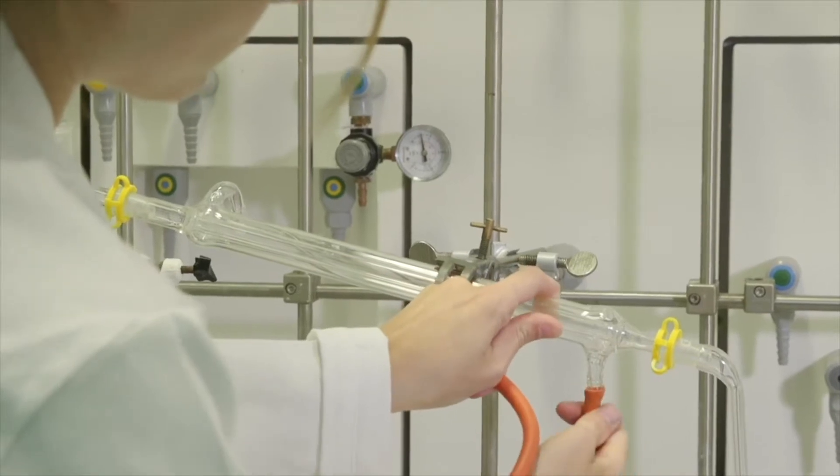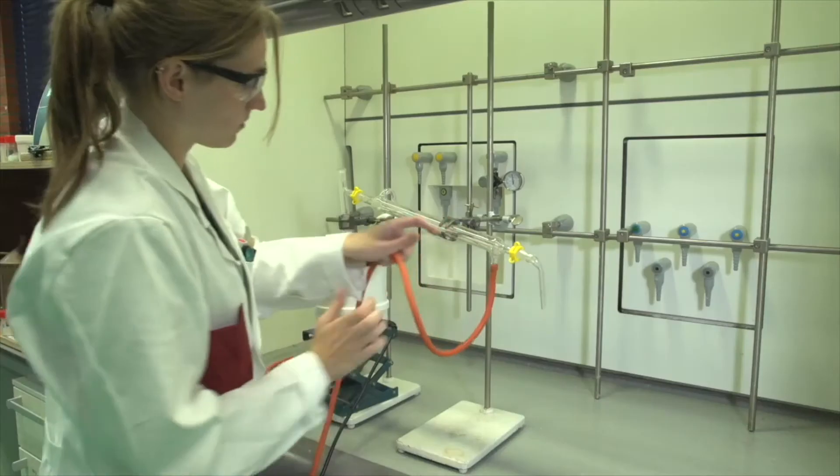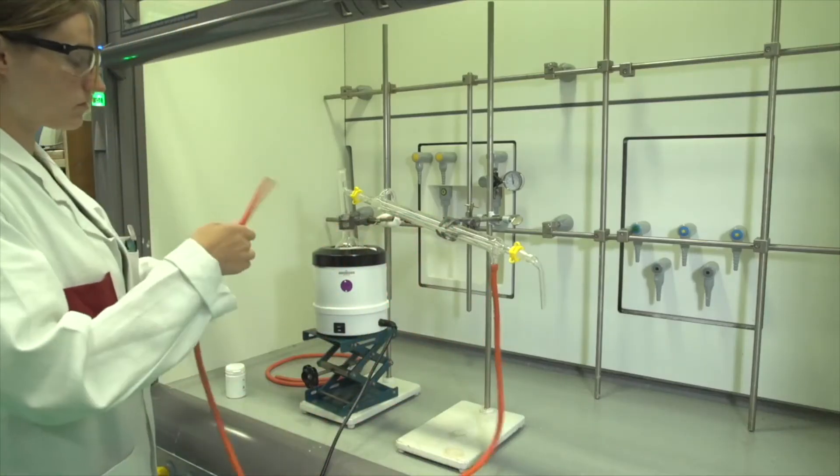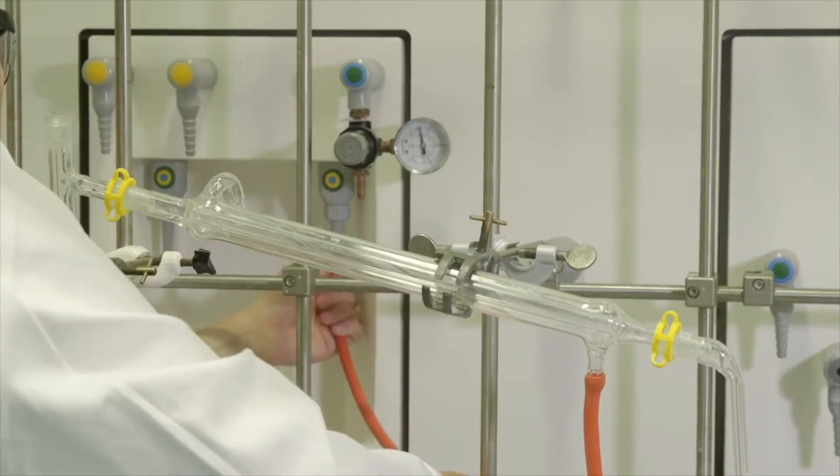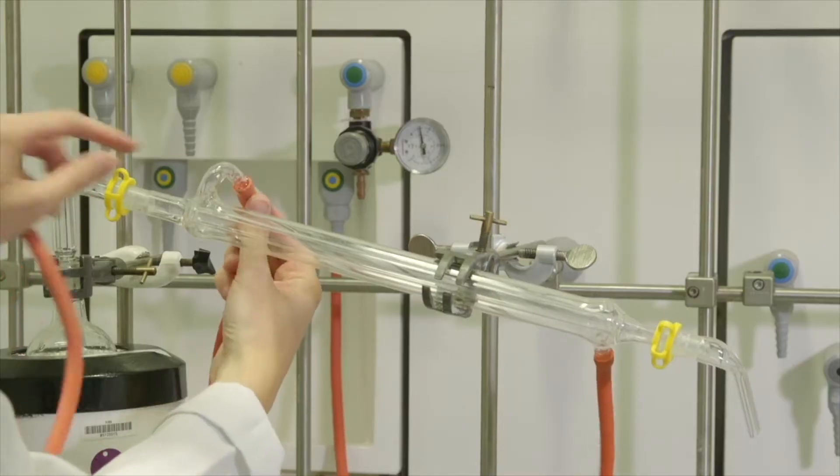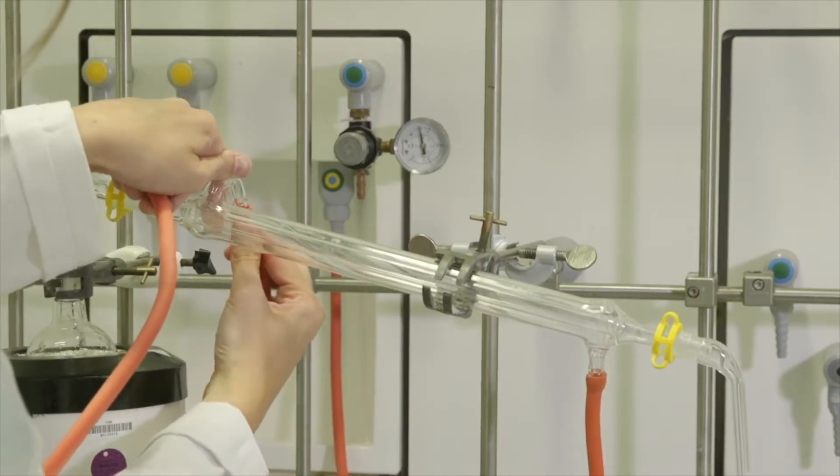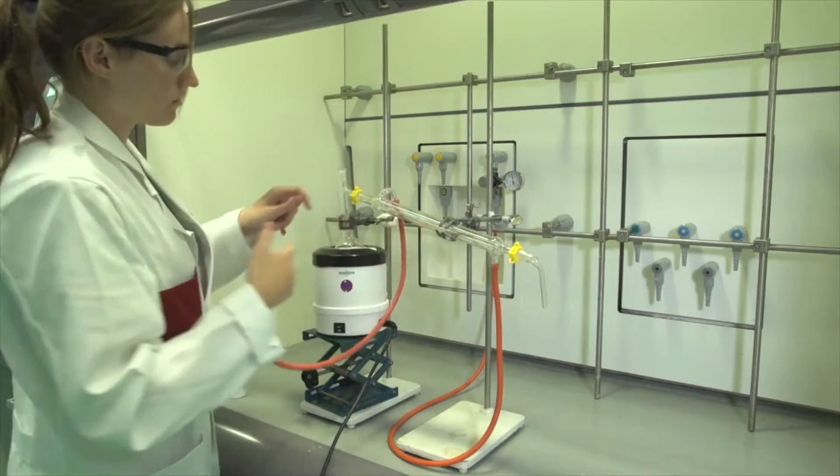Attach a tube to the lower port of the condenser. This is where the water will enter. Attach the other end of this tube to the tap. The water will flow when the tap is turned on. To drain the water, the second tube is attached to the upper port of the condenser and the other end placed in the sink drain.